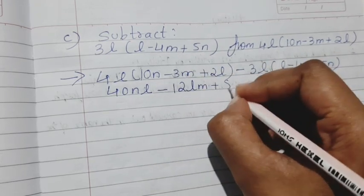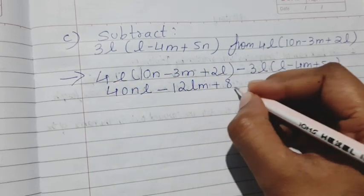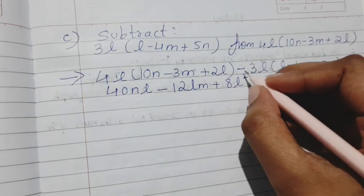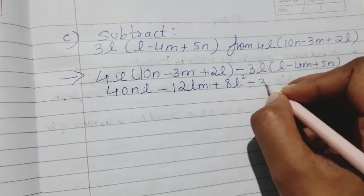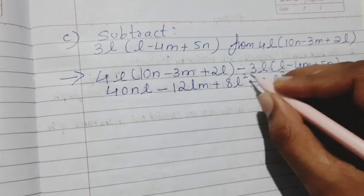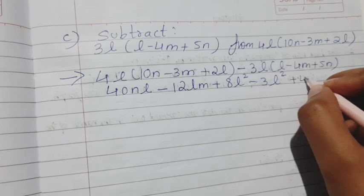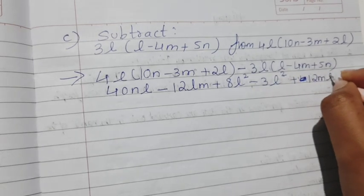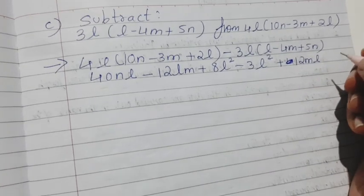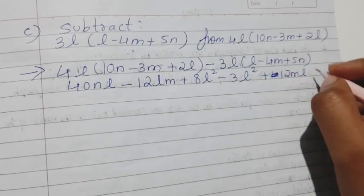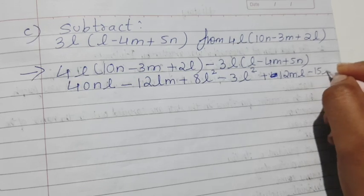Plus 2×4s are 8, it will be 8l square. And then minus 3l square minus into minus plus. 4×3, 4s are 12, it will be 12ml. And then comes 3×5s are 15, minus 15ln.